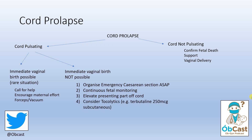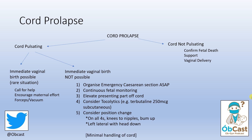Other things you can try are tocolytics, to relax the uterine muscle and reduce contractions. You can use terbutaline here, which is a beta-agonist, at 250 micrograms subcutaneously. You can consider a position change — the most common is all fours, knees to nipples and bum up. Another option is left lateral position with reverse Trendelenburg, or head down. Also, minimally handle the umbilical cord, because with repeated touch it can cause spasm which can reduce blood flow to the baby.